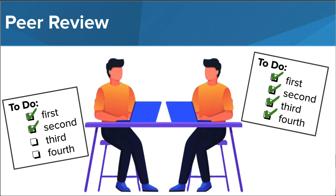Peer review is another great way to get feedback on your program. We will learn a bit more about structured peer review sessions later in this lesson, but simply turning to a partner and asking them for feedback on your program while you give feedback on theirs is a great way to be sure that you are both on the right track and to gain a different perspective if you're stuck. Now it's your turn to take a deeper look at these strategies.